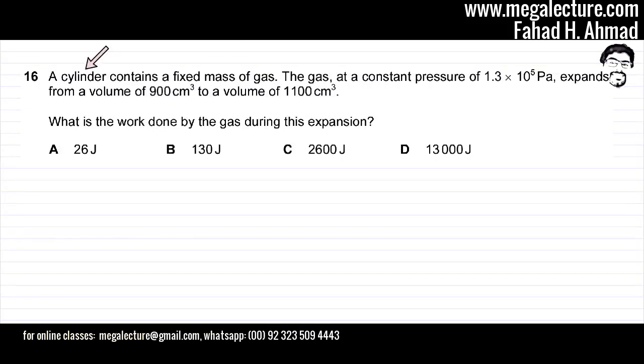The following question: A cylinder contains a fixed mass of gas. The gas, at a constant pressure of 1.3 × 10⁵ pascals, expands from a volume of 900 cm³ to a volume of 1100 cm³. What is the work done by the gas during the expansion?